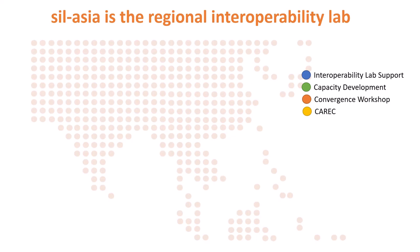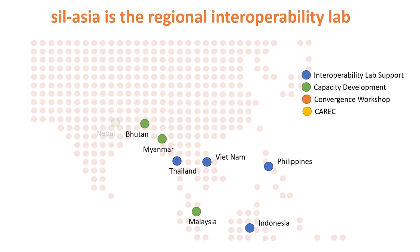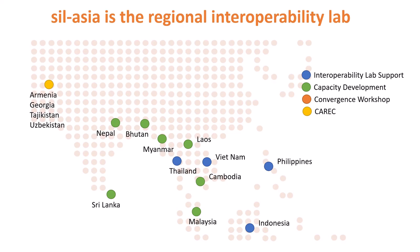Since our inception three years ago, the lab has already provided support to over a dozen countries across Asia-Pacific. The support includes technical assistance, capacity development, workshops, and peer-to-peer knowledge exchange. The lab is also working on providing support for the establishment of interoperability laboratories in some countries across the region. By the third quarter of this year, we are targeting to expand our services and partner with countries in the Central Asia region.